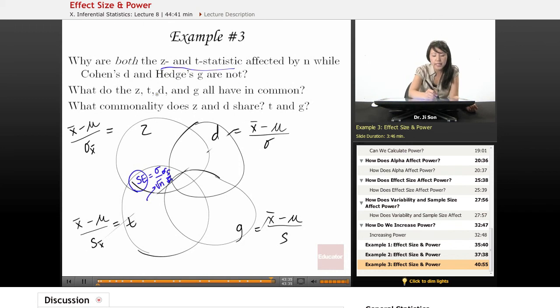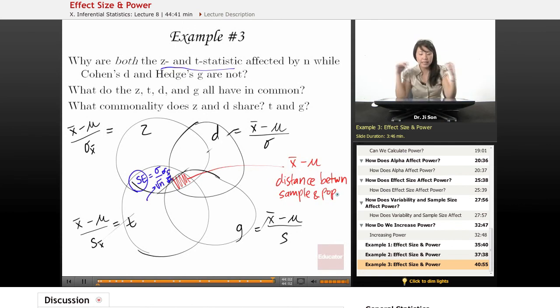And so it's really because they are distances in terms of standard error. So what do the Z, T, D, and G all have in common? So that's, so that's this little guy right here. What do they all have in common? Well, they all have this thing in common, right? So they're all about the distance between sample and population, right? So it's all about that distance. Some of them are in terms of standard error, and some of them are in terms of population standard deviation.